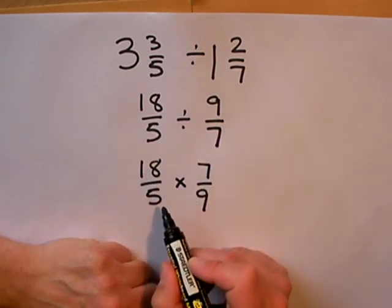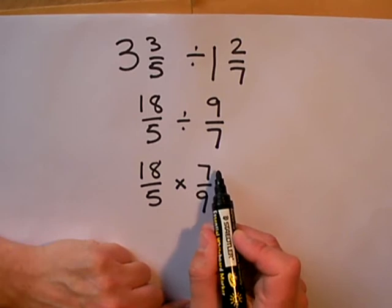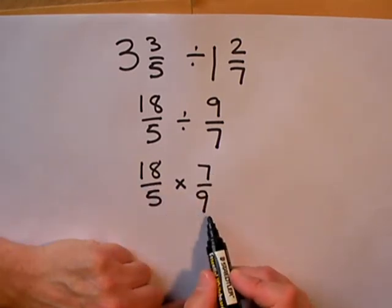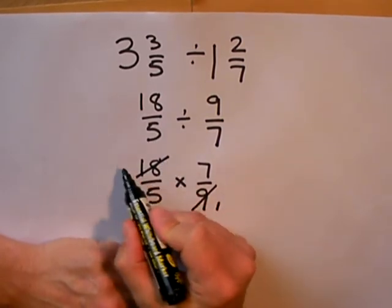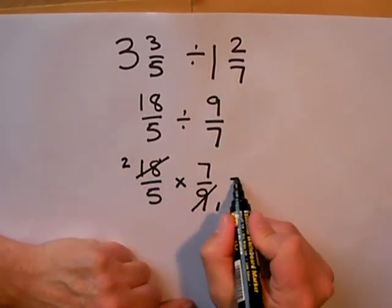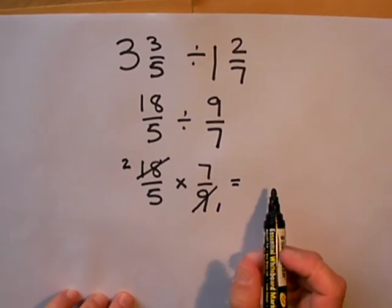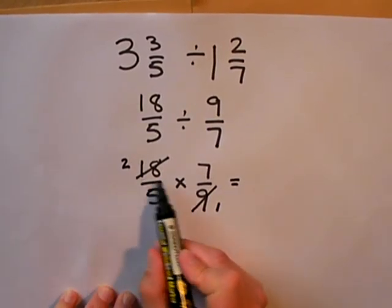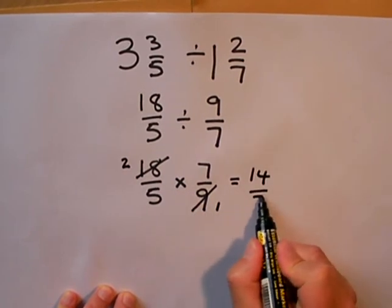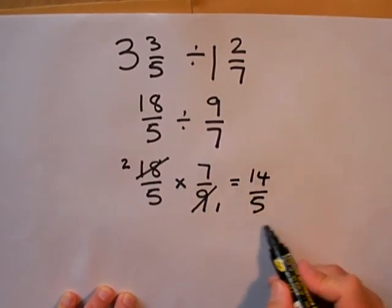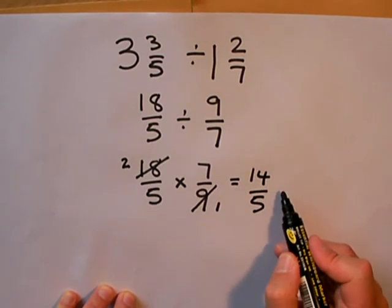So let's first look to see if we can cancel any of the numbers. 5 and 7 don't cancel, but 18 and 9 do. So how many 9s in 9? 1. How many 9s in 18? 2. This leaves me with a fairly simple multiplication to do: 2 times 7 is 14, 5 times 1 is 5. Here's my answer to the question. However, it's a top heavy fraction, so I need to change it back into a mixed number.